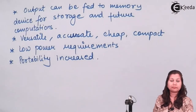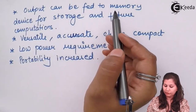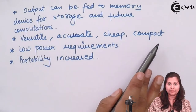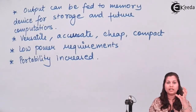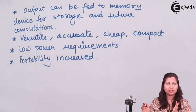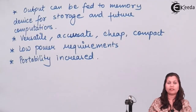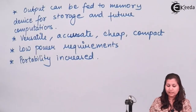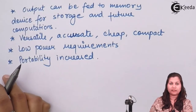If memory storage devices are connected with digital voltmeters, the output of the DVMs can be stored in memory for future computations. Also, DVMs are very versatile, accurate, cheap, and compact devices. They give accurate readings, can be used in any environment, their size is very small increasing portability, and their power requirements are very less. These are all the advantages of the digital voltmeters.